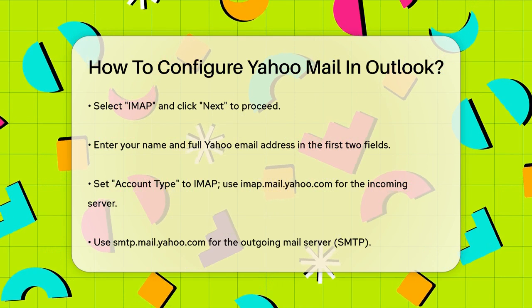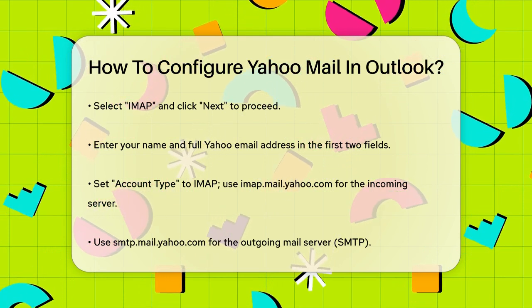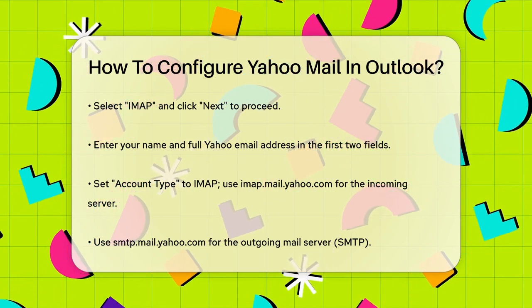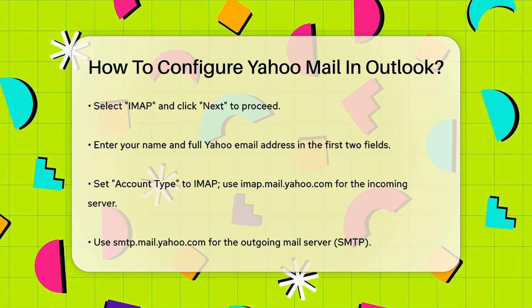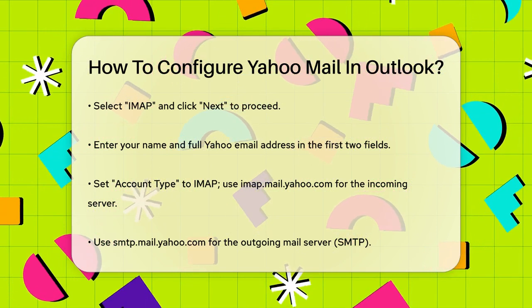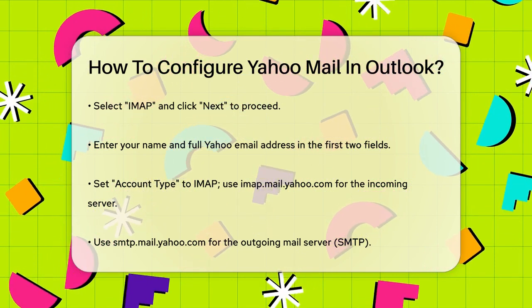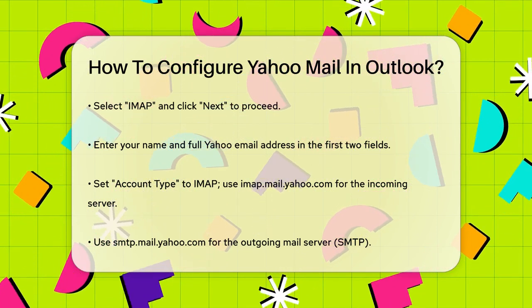Click on More Settings and go to the Outgoing Server tab. Here, check the box that says My Outgoing Server (SMTP) Requires Authentication and choose Use Same Settings as My Incoming Mail Server.